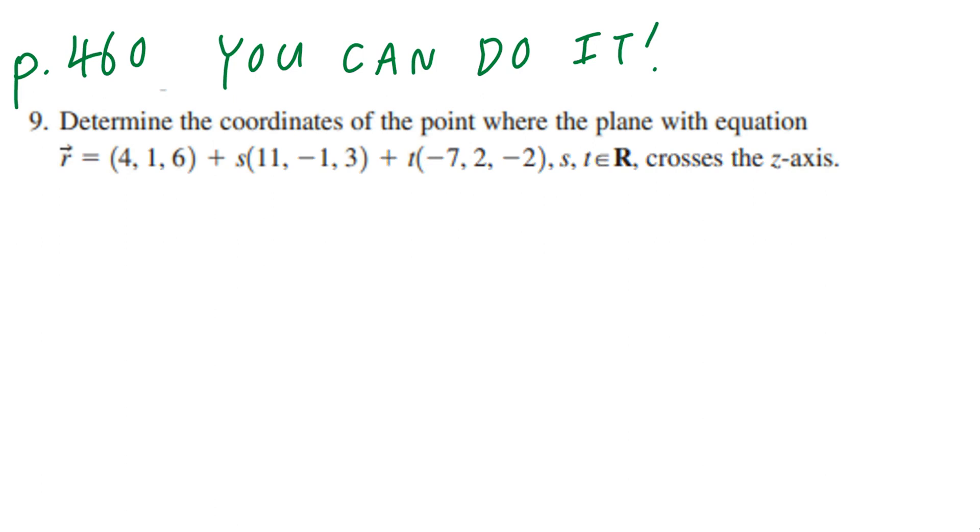Hi everyone, let's take a look at number 9 on page 460. Determine the coordinates of the point where the plane with equation vector r equals (4,1,6) plus s times (11,-1,3) plus t times (-7,2,-2), where s and t are elements of real numbers, crosses the z-axis.